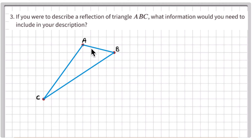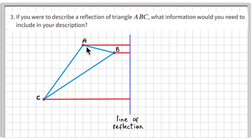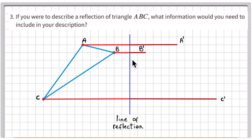Now, for a reflection — what information do you need to perform it or describe what was done? You need a line of reflection. To reflect the image over this line, draw a perpendicular line from each point to the line of reflection, forming a 90-degree angle with it, then repeat that same length on the other side to find each corresponding point of the reflected triangle.